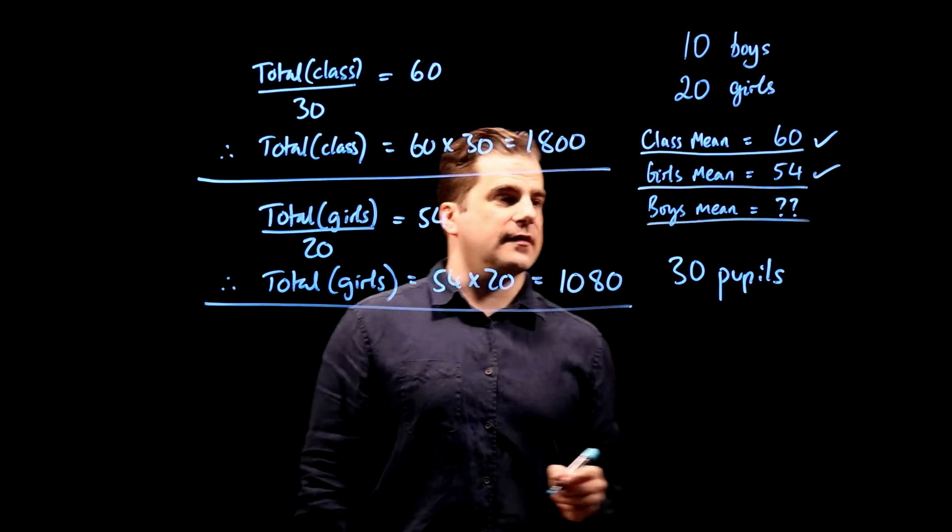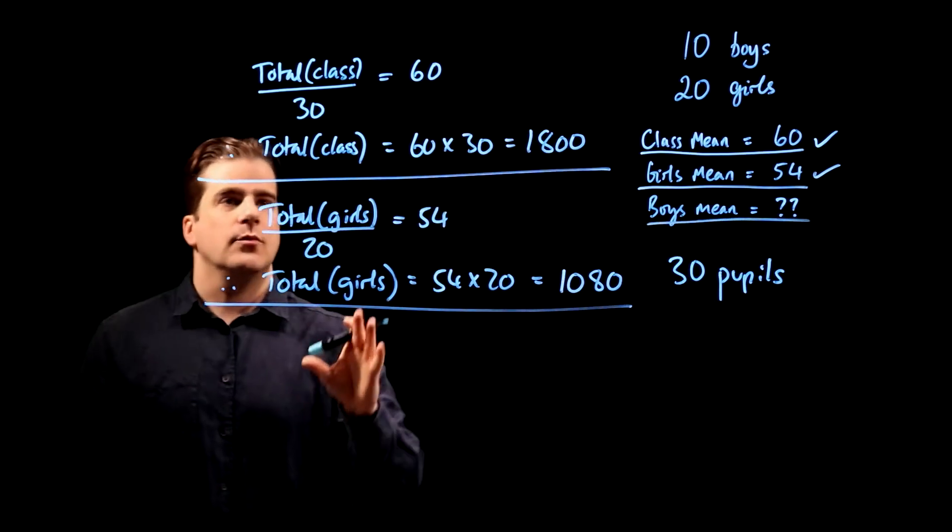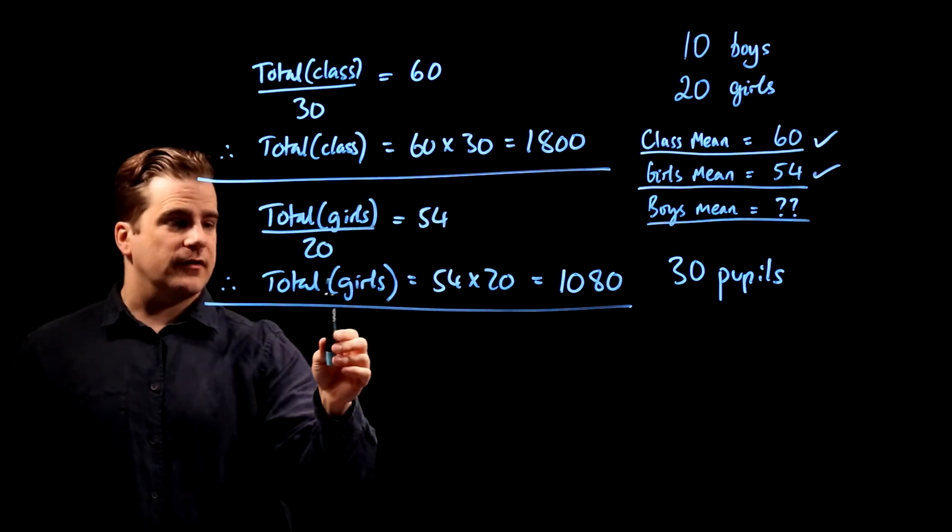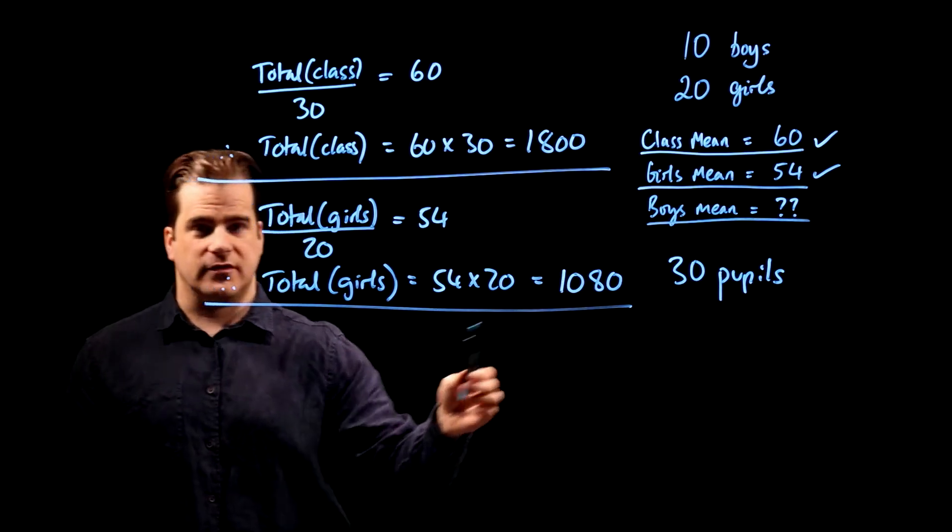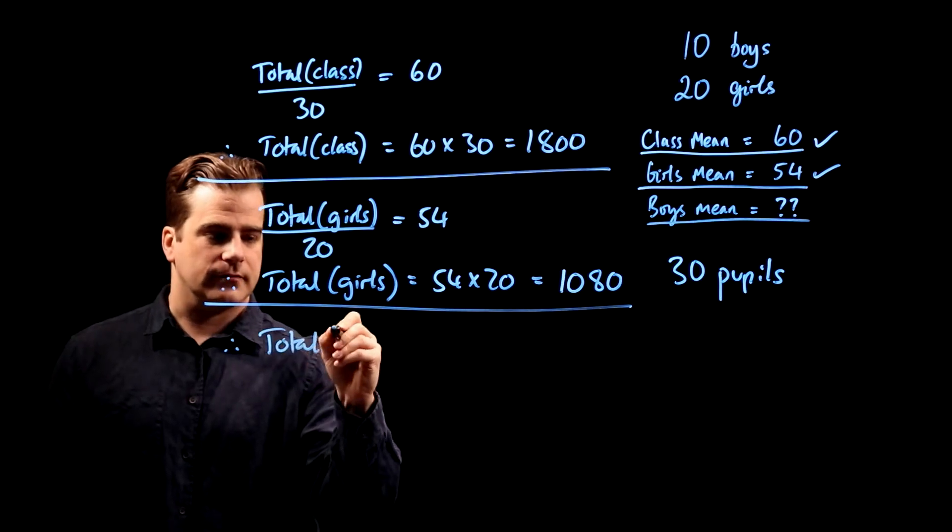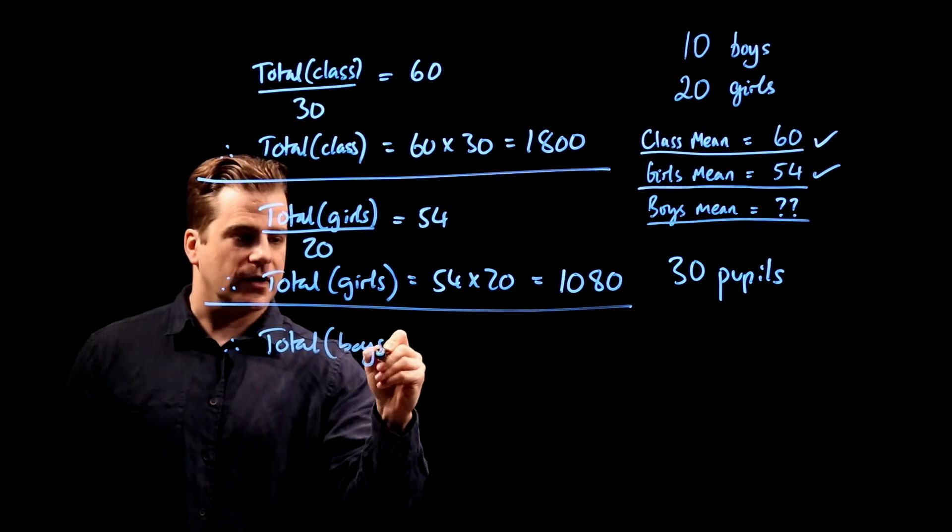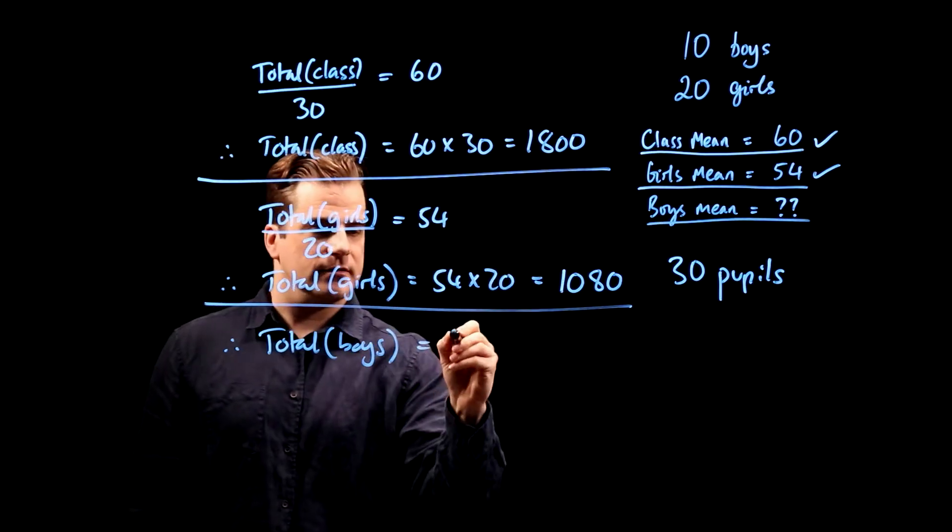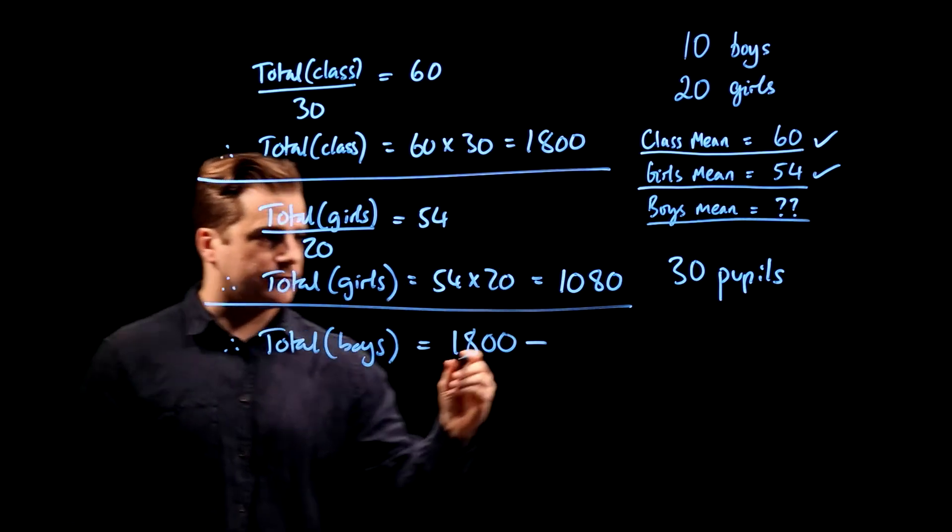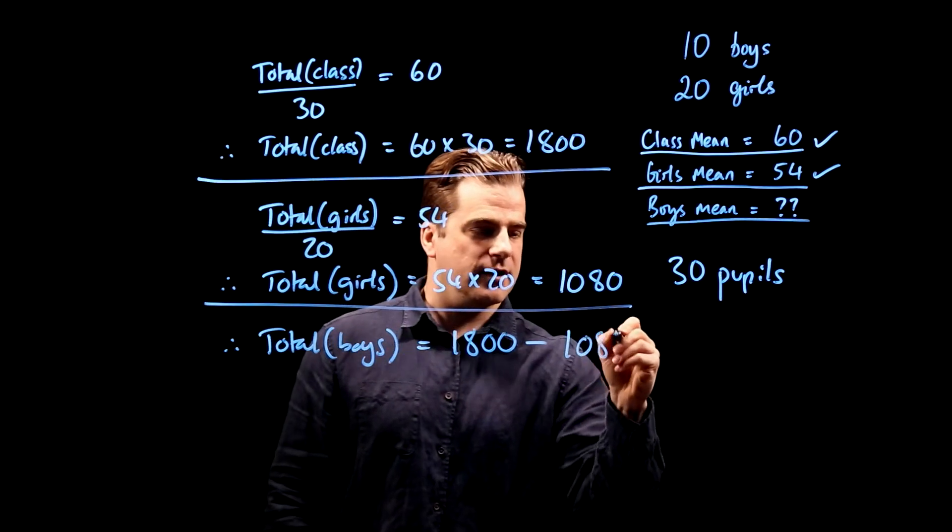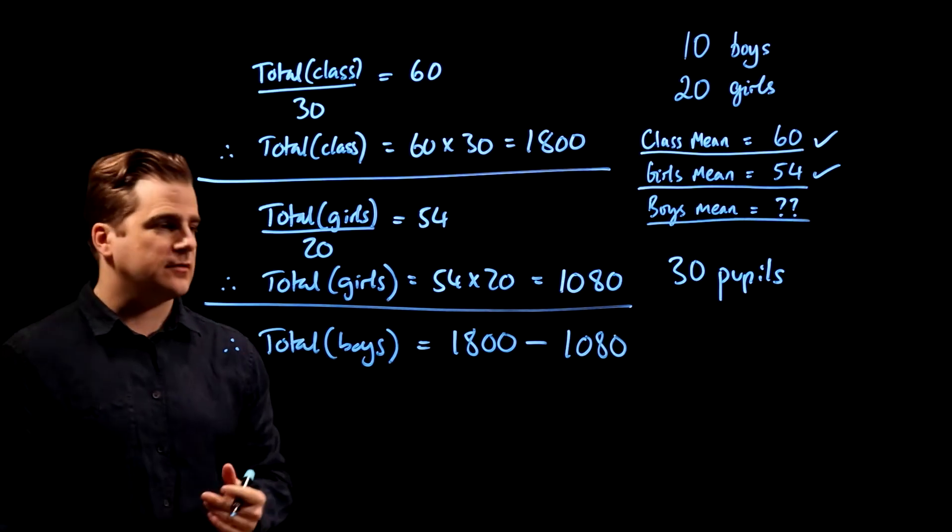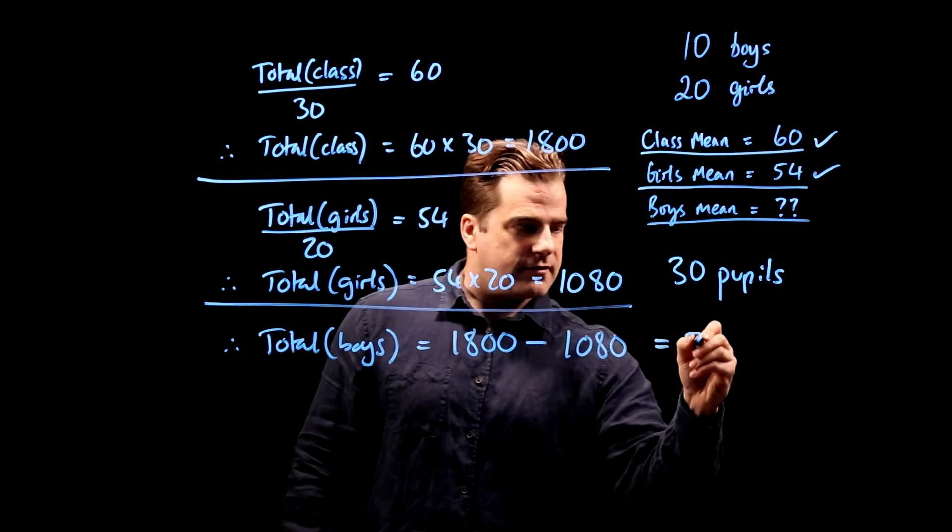Now we can get the answer. We know that the class total is 1,800 and the girls' total is 1,080. Therefore, the total for the boys is the class total 1,800 minus the girls' total 1,080, because the class total is the girls' total plus the boys' total, which is 720.